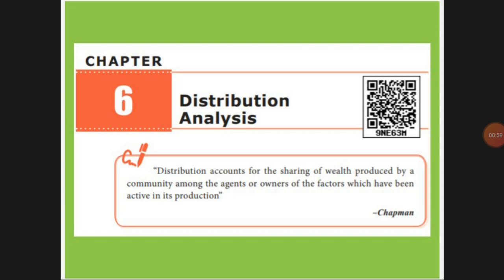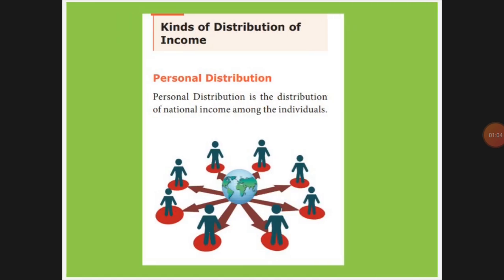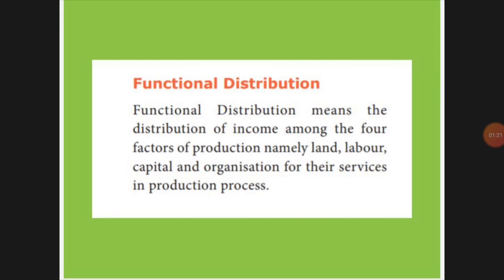How income can be calculated we will be learning in this lesson. First, the kinds of distribution. The first kind is personal distribution — the national income distributed to each individual citizen. Next is functional distribution — how the four factors, land, labor, capital, and organization, are distributed according to their service.